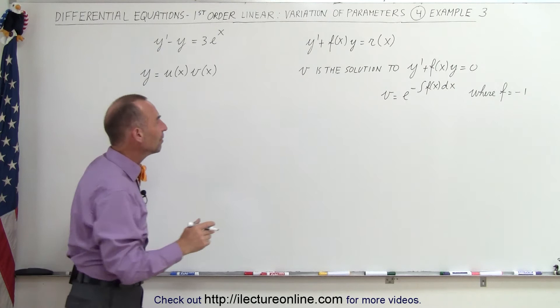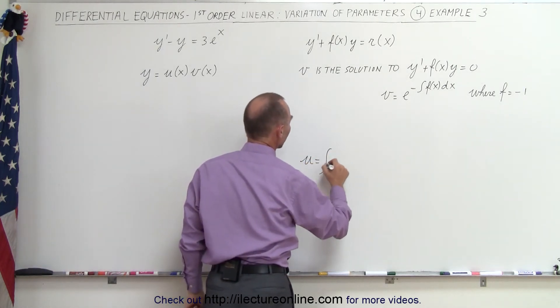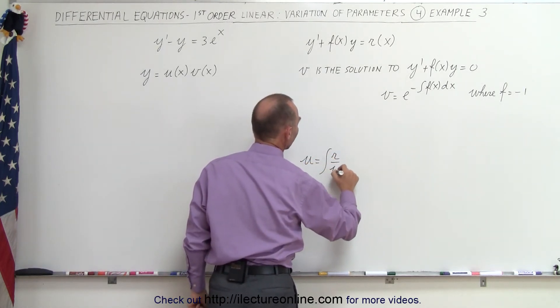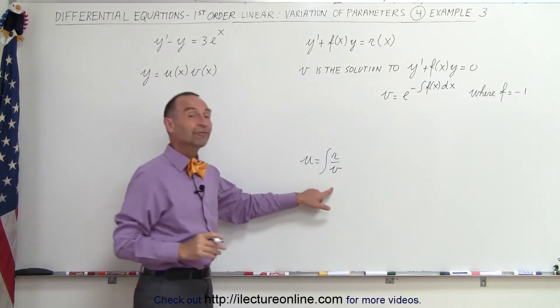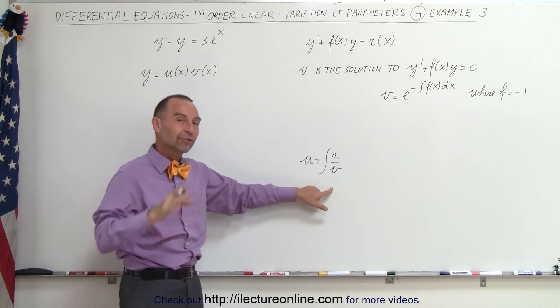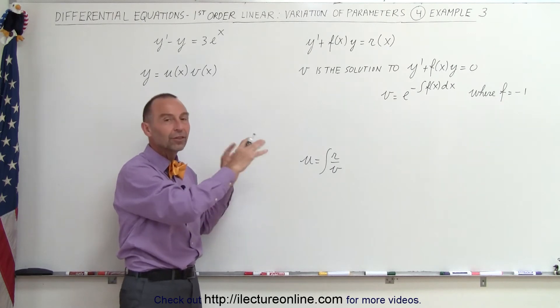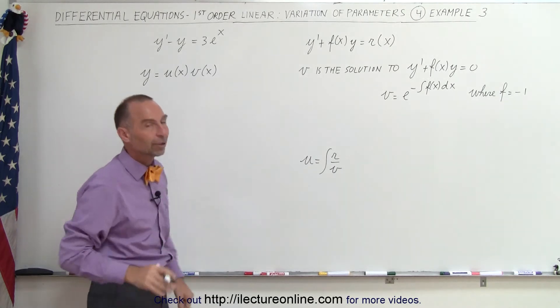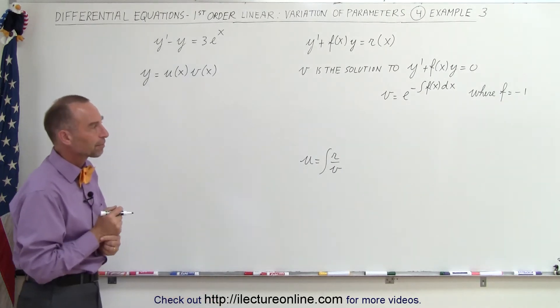Now, u can be found by saying that u will be equal to the integral of r divided by v. Where did that come from? Well, if you're interested, go back to the first video in this series where I showed the theory behind this particular method of variation of parameters.